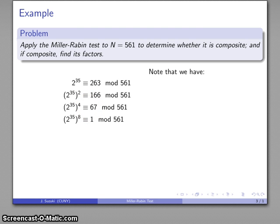Because every term in this sequence is the square of the preceding term, this last set of congruences gives us something very useful. If I square 67, I get 1 mod 561.